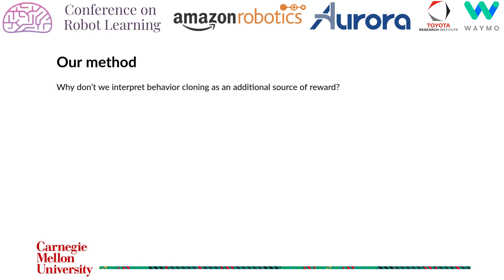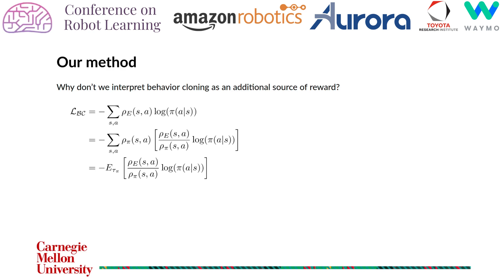We consider behavior cloning as an additional source of reward in addition to the GAIL reward. To do that, we first write behavior cloning as the expected state-action density multiplied with the log probability of the action. This expectation is over the expert trajectories, which can be converted to policy trajectory via importance sampling. The GAIL term is the same log action probability multiplied with the advantage function from the discriminator.